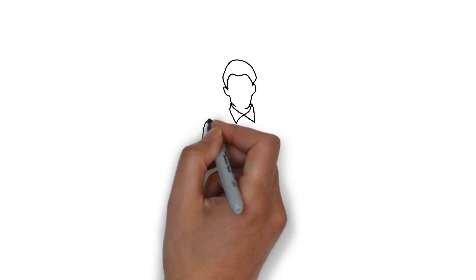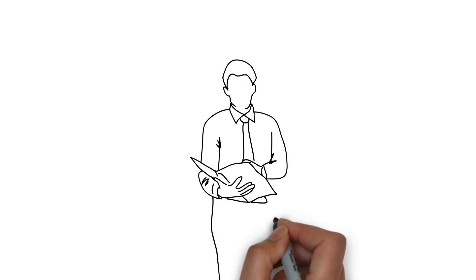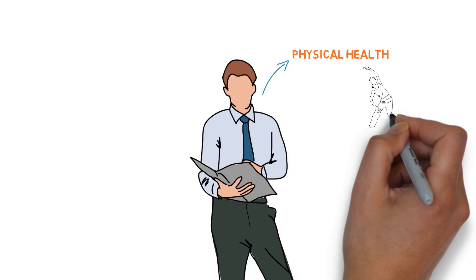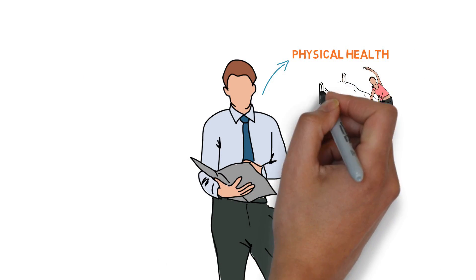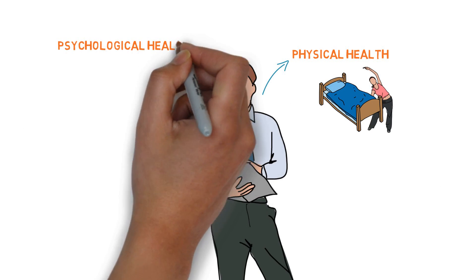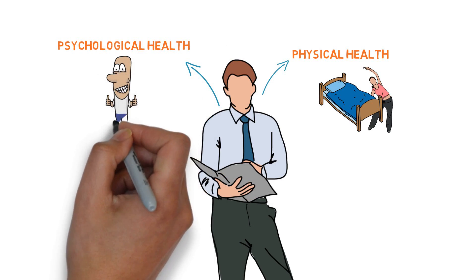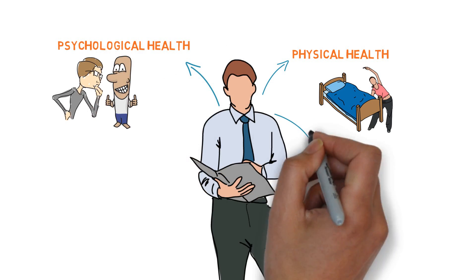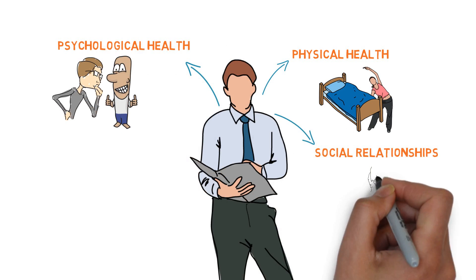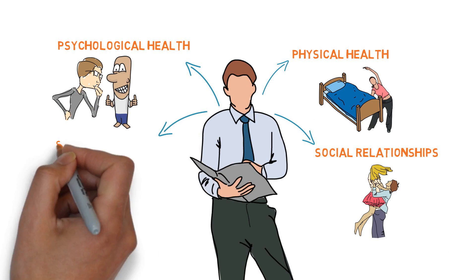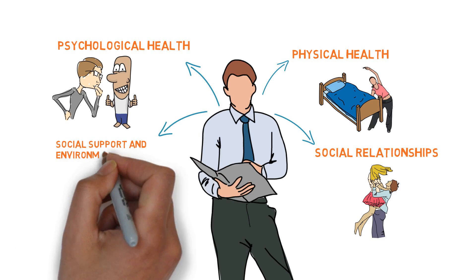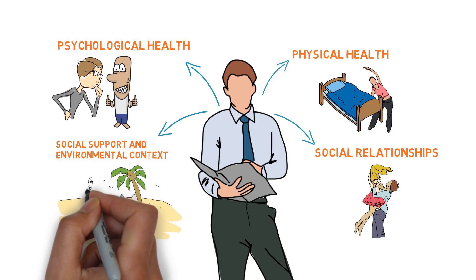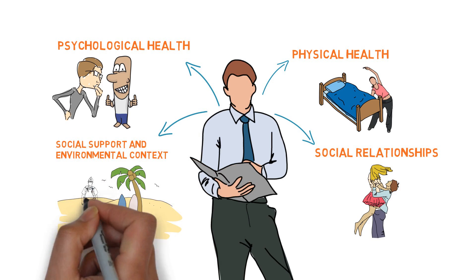Our quality of life technologies team collects data from voluntary study participants related to their physical health — like physical activity, energy, sleep, and rest — psychological health, like positive and negative feelings, self-esteem, thinking, and concentration; social relationships, like personal relationships and social support; and environmental context, like safety, security, leisure opportunities, transportation, and pollution and noise conditions.